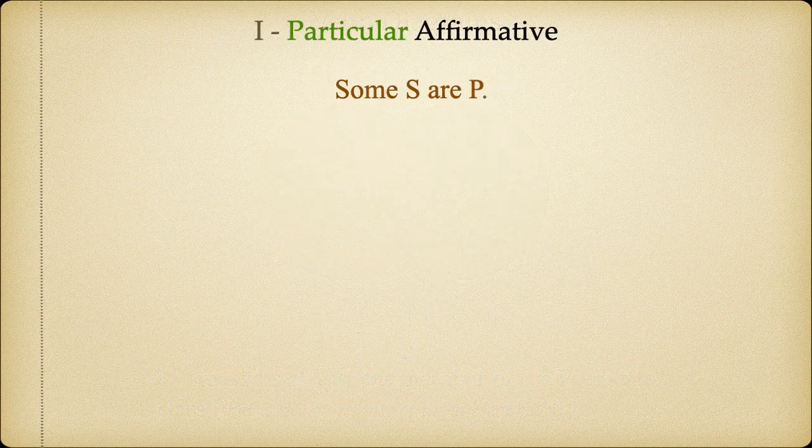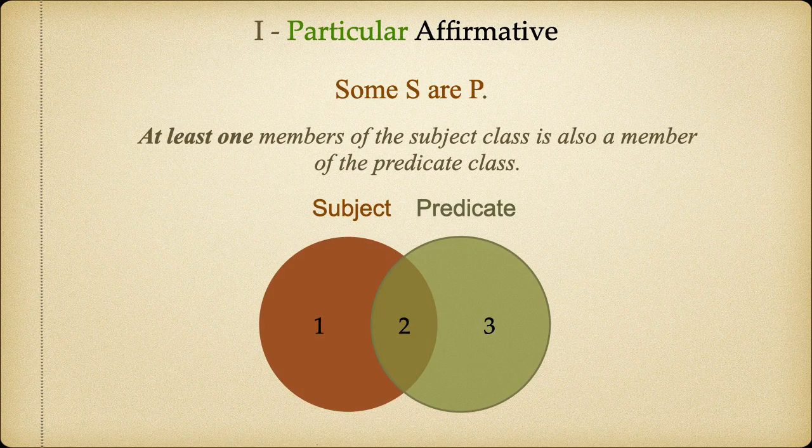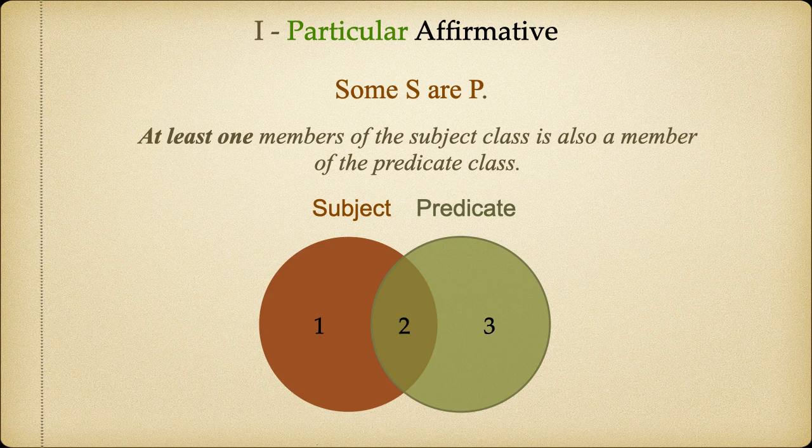Now, let's think about the particular affirmative statement. It says there exists at least one thing that is a member of both the subject and predicate class, some S are P. To demonstrate this, we place an X in Region 2. This diagram shows that some S are P. There's at least one member of S that's also a member of P.